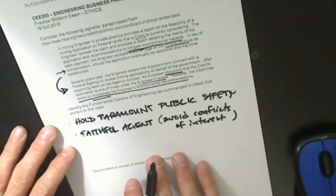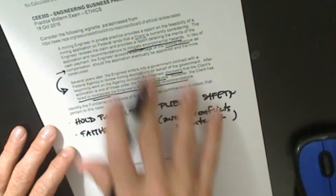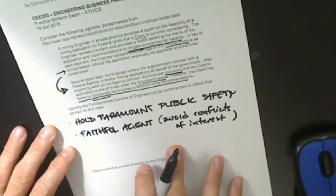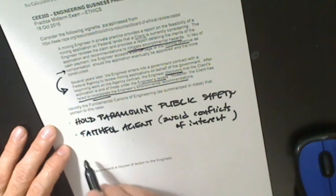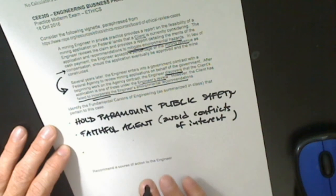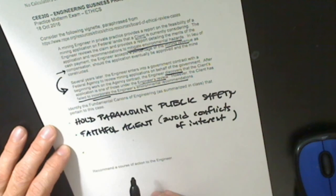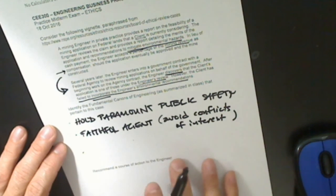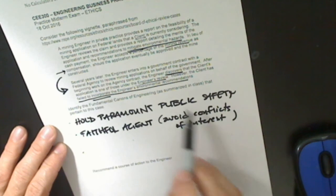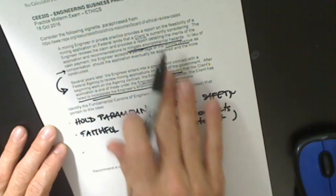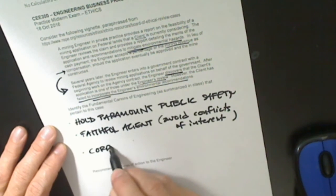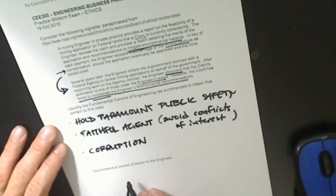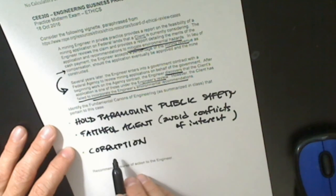Build their professional reputation on the merit of services and not compete unfairly with others. There are no competitive issues in this case, so I don't think that canon applies. Conduct themselves honorably, responsibly, ethically, and lawfully is a very broad canon. The American Society of Civil Engineers describes it as honor, integrity, and dignity, and adds zero tolerance for bribery, fraud, or corruption. It could apply to almost any case given how broadly it's written. In particular, the conflict of interest and financial rewards that may accrue if the mine is approved might be construed not as a bribe, but as corruption — so this fundamental canon might apply.